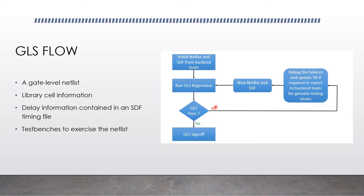If the GLS run fails, then you need to debug. When you debug, it might be issues with your testbench or it might be genuine timing issues. The backend team needs to revisit their flow and generate a new netlist and SDF, and you rerun your GLS simulation to sign off the product.